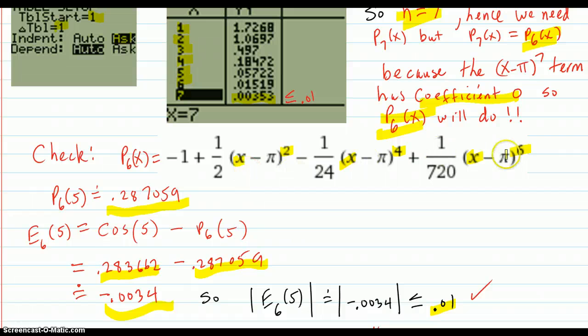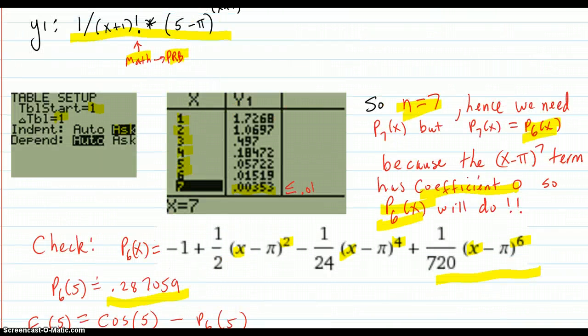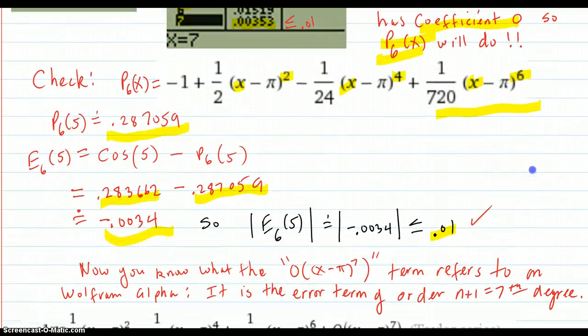We determined that we needed a P₆ Taylor polynomial to do the trick at x equals 5. So the error would be under 0.01. And it was indeed under 0.01.